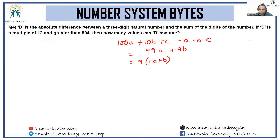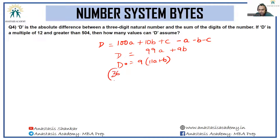If D must be a multiple of 12 and D is already a multiple of 9, then D must be a multiple of LCM(9, 12) = 36. This means 9(11a + b) is divisible by 36, so (11a + b) must be a multiple of 4.